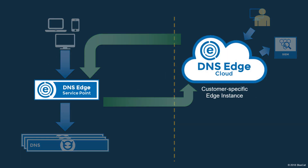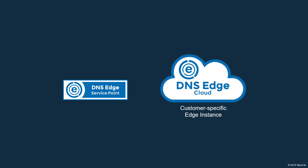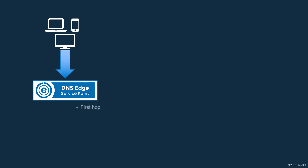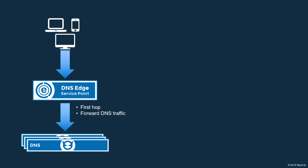Architecturally, DNS Edge is composed of two elements: a series of first-hop DNS servers called Service Points, and a customer-specific cloud-managed Edge instance for configuring policies and analyzing DNS data. Service Points are first-hop DNS servers deployed as part of an organization's DNS infrastructure. These Service Points are virtual appliances that act as forwarding DNS servers with caching capability. As first-hop devices, all DNS queries from clients pass through Service Points, including queries for both internal and external resources. Service Points enforce policies that allow normal DNS traffic to pass, and block or redirect queries that are identified as potential threats.